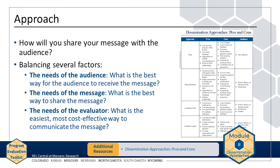Determining the right approach means balancing several factors: the needs of the audience — what is the best way for the audience to receive the message, and does the audience need multiple opportunities to consider it? The needs of the message — what is the best way to share the message, and are visuals necessary? The needs of the evaluator — what is the easiest, most cost-effective way to communicate the message? The handout, Dissemination Approaches: Pros and Cons, available on the resources page of the website, outlines the advantages and disadvantages of several approaches and can help inform your dissemination plan.